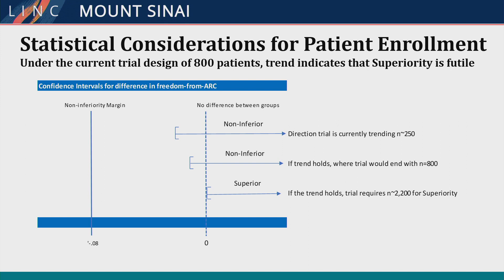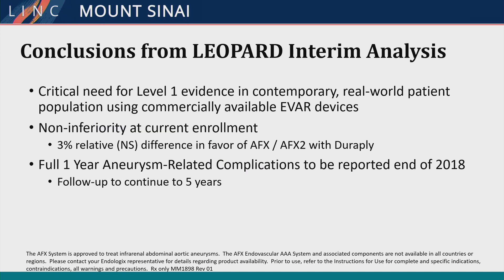This makes it non-inferior to the active fixation arm. They're not going to be able to do a superiority test on this, because we are not going to get 2,000 patients — we'll pretty much stop at 800 if we get there. In conclusion, this will be our first level-one, real-world population data using a commercial device comparing AFX to everything else. We'll be able to compare all grafts in use against AFX and get some real answers, including how much we're spending on these patients. It's non-inferiority, and one-year follow-up data will be reported at the end of 2018, with follow-up continuing to five years.